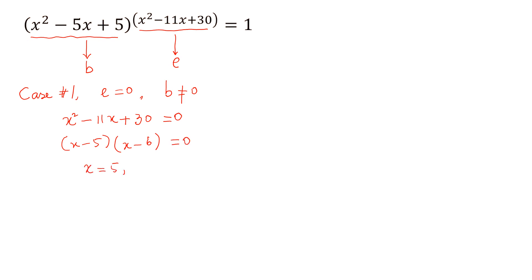Now if we put these two values in the base, because the base is not equal to 0, so first we try 5. So 5² - 5(5) + 5 and this is not equal to 0. Similarly, if we try 6, so 6² - 5(6) + 5 and if we simplify this, this is also not equal to 0. So two values are 5 and 6.